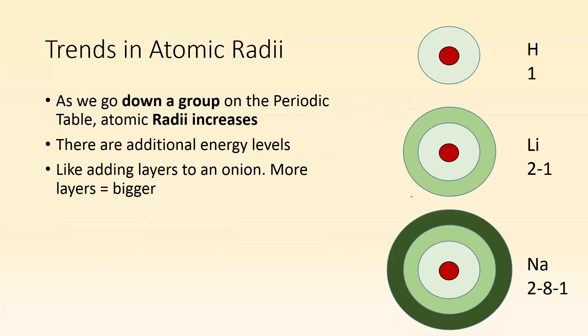Trends in atomic radii. As we go down a group on the periodic table, the atomic radii increases. The reason for that is there's additional energy levels. It's like adding layers to an onion. The more layers you got, the bigger it gets. If we take a look at hydrogen and its electron configuration, it's only got the one energy level. You move down, you got lithium. There's a second energy level there, it's even bigger. You move down again, you get sodium. There's three energy levels. It's going to be bigger than lithium and hydrogen.